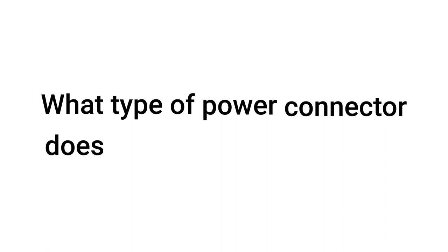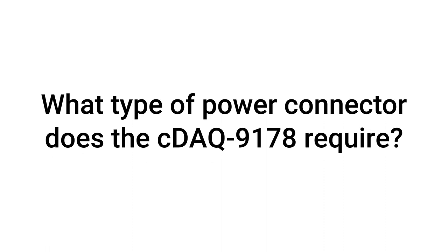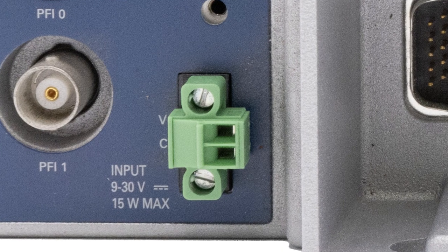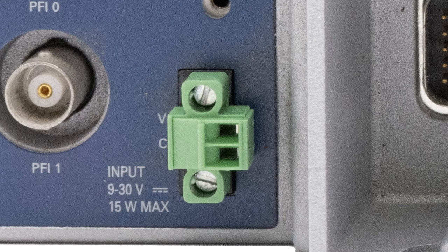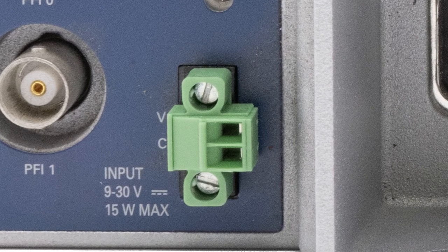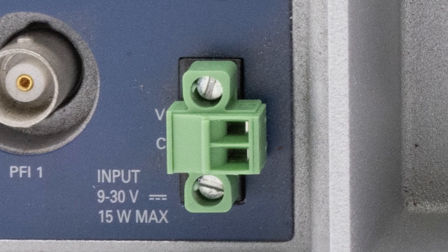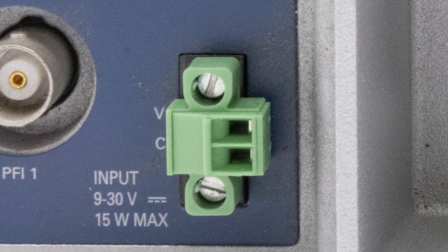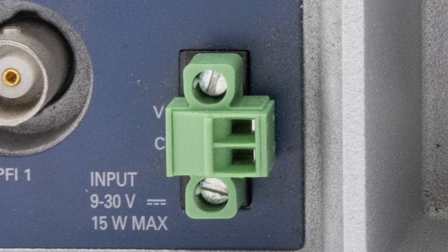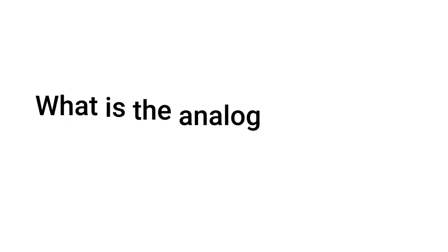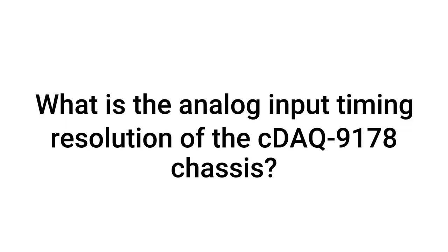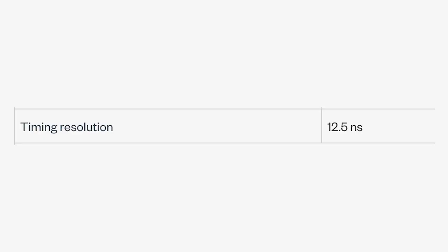What type of power connector does the CDAQ-9178 require? The CDAQ-9178 power input connector is a two-position 3.5mm pitch pluggable screw terminal with screw locks, similar to Soro CTMH020F8-0N001. The CDAQ-9178 chassis also has an analog input timing resolution of 12.5 ns.